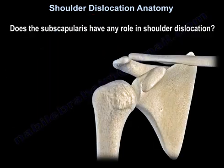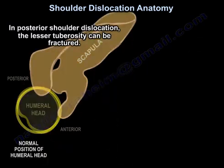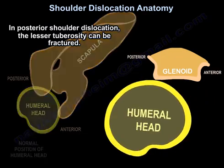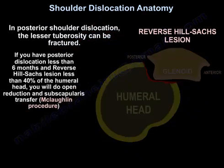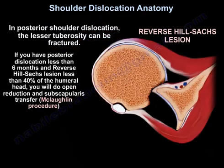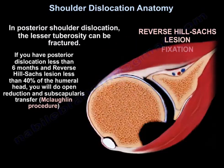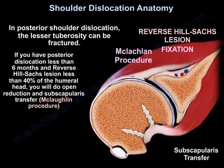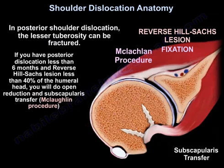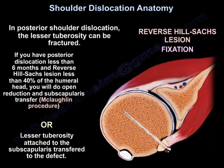How about the subscapularis? Does it have any role in shoulder dislocation? In posterior shoulder dislocation, the lesser tuberosity can be fractured. If you have posterior dislocation less than 6 months and the reverse Hill-Sachs lesion is less than 40% of the humeral head, you will do open reduction and subscapularis transfer. They call it the McLaughlin procedure — the lesser tuberosity attached to the subscapularis is transferred to the defect.